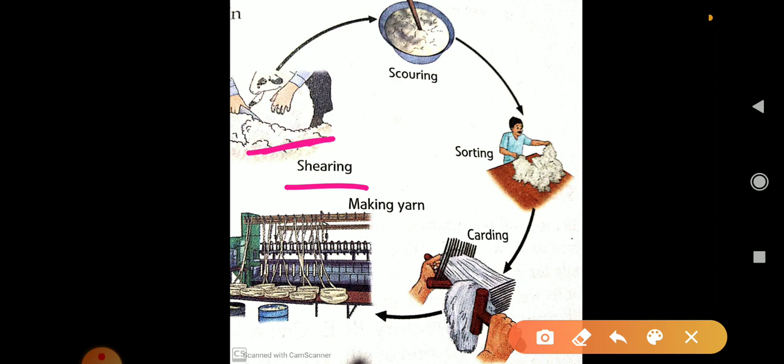This shearing is normally done during the hot season. It allows them to grow back hair by the time winter arrives. The amount of wool produced by one sheep varies from one kg to three kg.